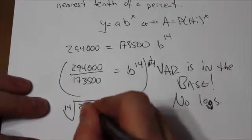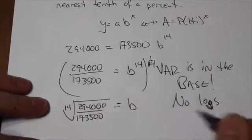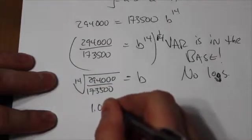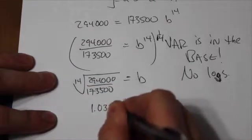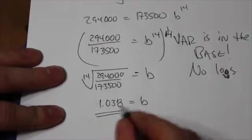And this will be the 14th root of 294,000 over 173,500. Now thankfully I have already done this question, so I can tell you right now that that answer is going to be 1.038 is equal to b.